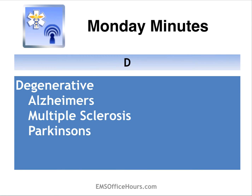D is for Degenerative-type disorders — these are progressive deteriorations of the central nervous system, things like Alzheimer's disease, MS, and Parkinson's disease.